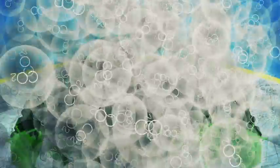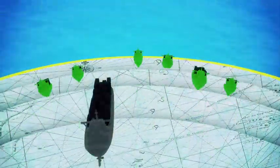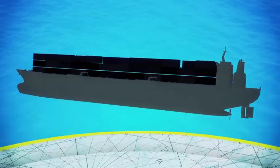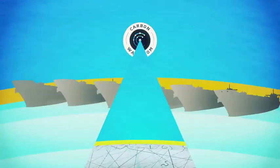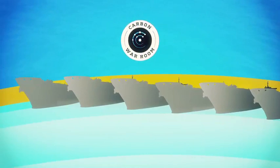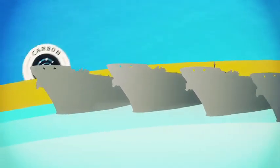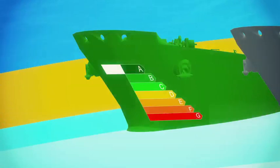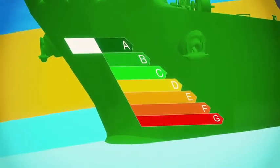What if it was easy to tell the difference between efficient and inefficient ships? At the Carbon War Room, the team wanted to see what would happen. ShippingEfficiency.org is an online tool that puts a label on 70,000 of the world's commercial ships, from A to G for efficiency, like on a fridge or a car.